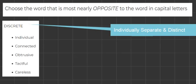So the first answer option is individual. And this fits in with discrete, individually separate. So it's not the opposite, so we can take it out.